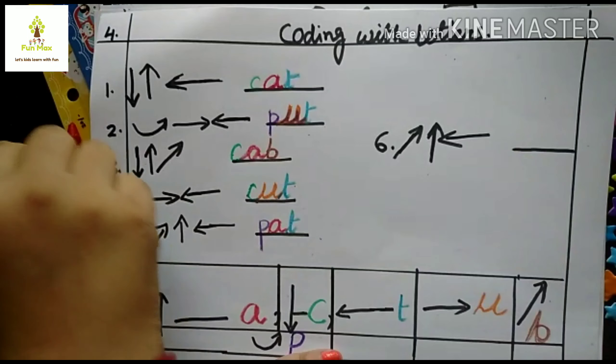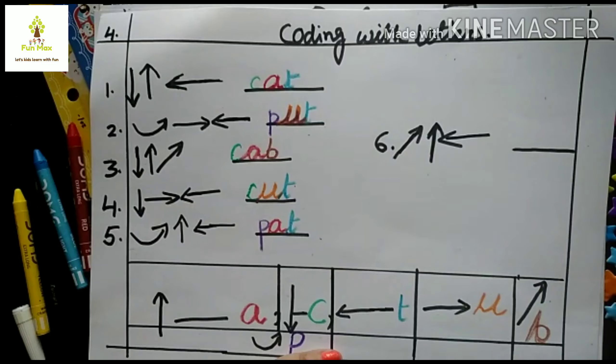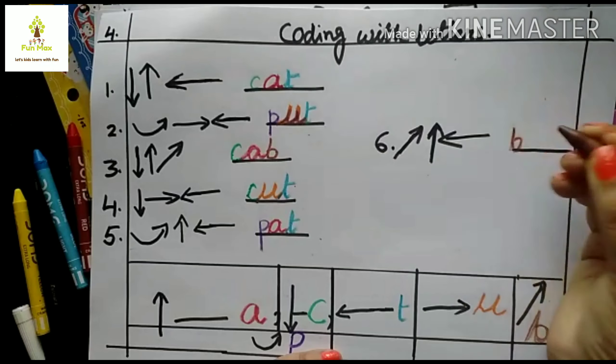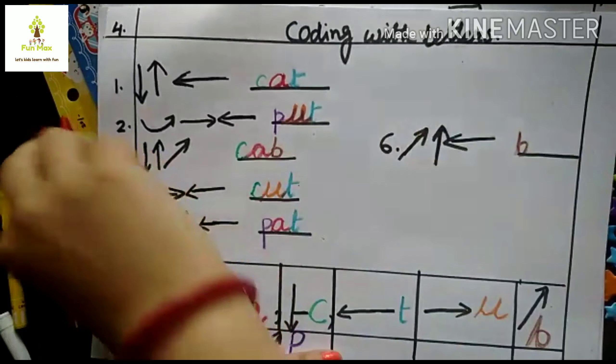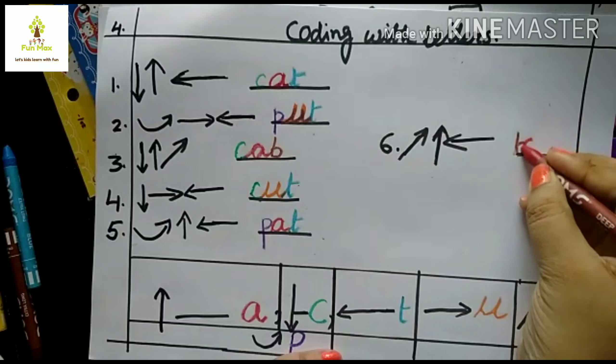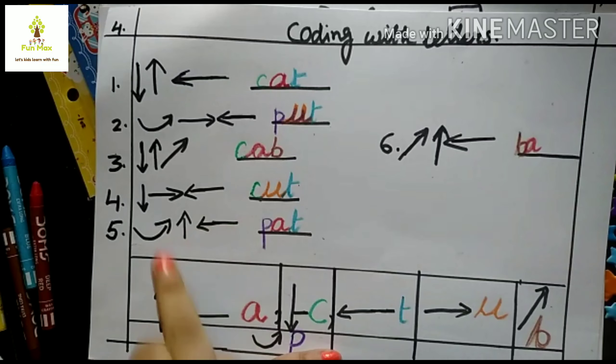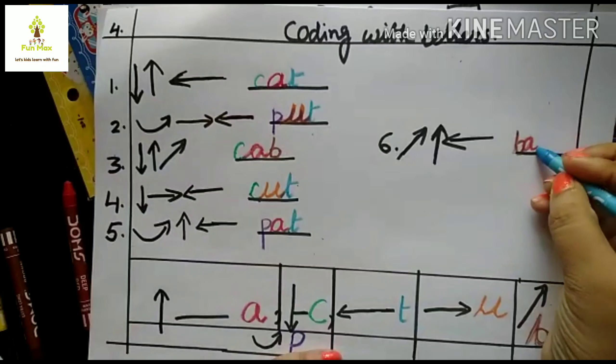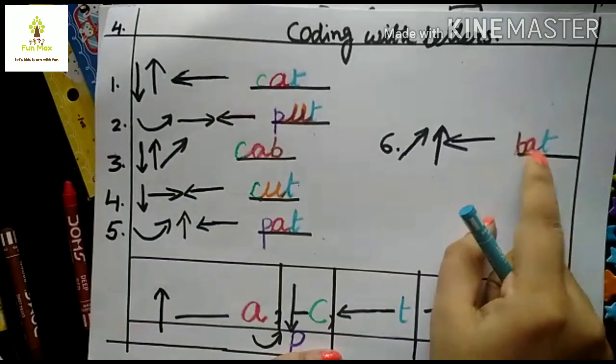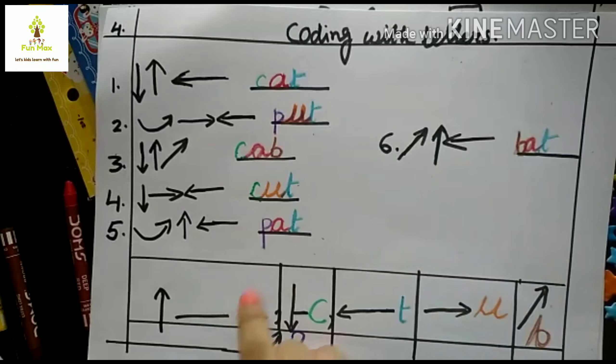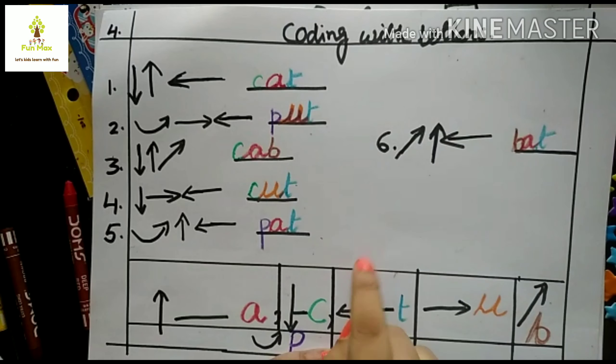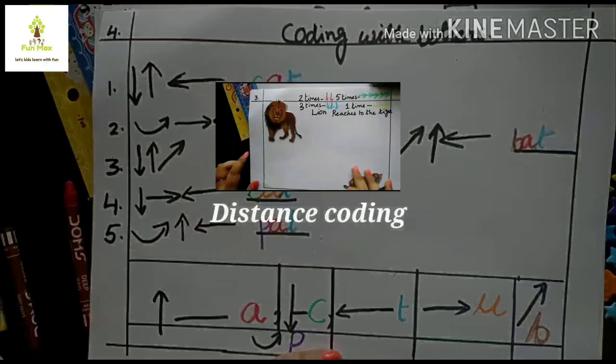Here you can find what is this. Right slanting arrow, that is B. Up arrow, that is A. And left arrow, that is T. Bat. Change the colors, follow the directions, follow the arrows, and decode the word. Four types of activity you can do in one worksheet and make different words also.